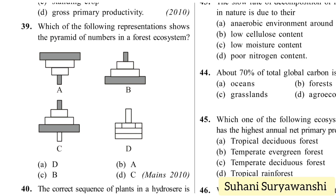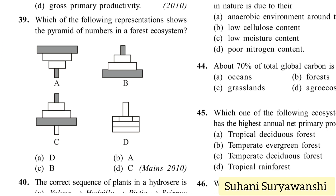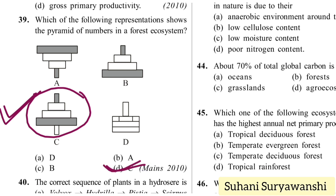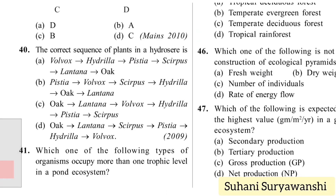Which of the following representations shows the pyramid of numbers in a forest ecosystem? Option A is inverted, B is upright. In a forest, the number of trees is less, insects are more, and secondary consumers are fewer again. So option C — a spindle-shaped pyramid — is correct. Option D is the right answer.